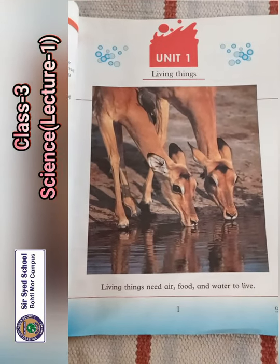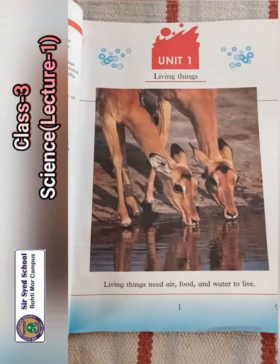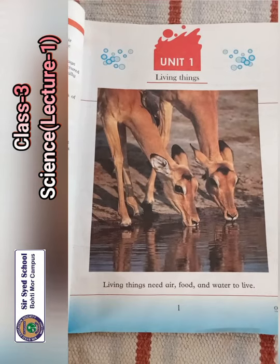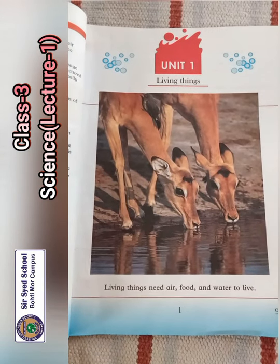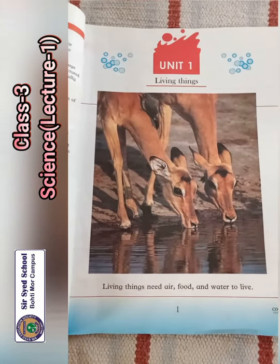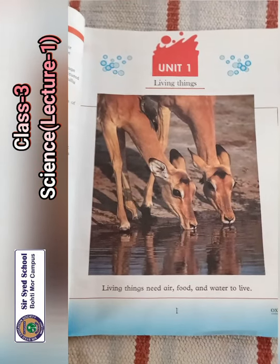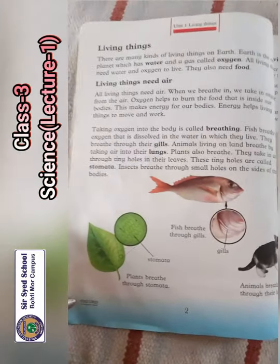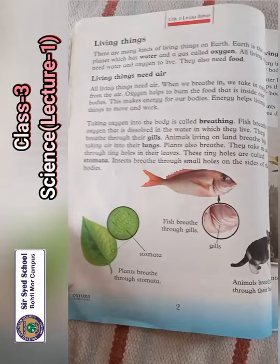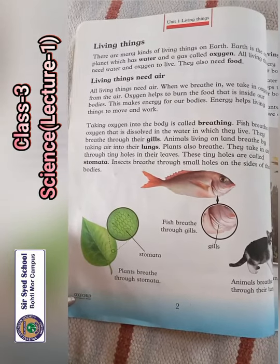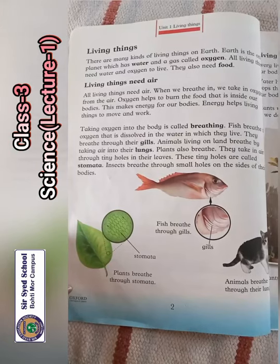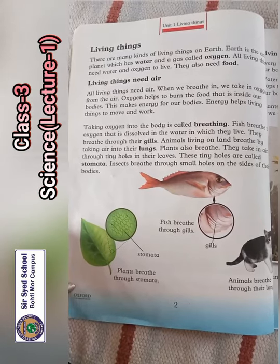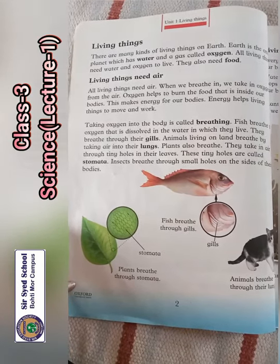Unit One: Living Things. Living things need air, food, and water to live. Earth is the only planet which has water and a gas called oxygen. There are many kinds of living things on Earth. Our living things need water and oxygen to live. They also need food.